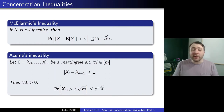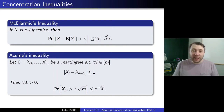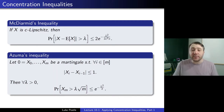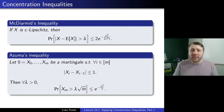That was McDiarmid's inequality, which we derived from the more general Azuma's inequality. If 0 = X₀, …, Xₘ is a martingale starting at 0, such that Xᵢ − Xᵢ₋₁ is at most 1 in absolute value for every i, then for every λ > 0, the probability that Xₘ > λ√m is at most e^{−λ²/2}. You can scale the variables if you want them to change by c, renormalize so the expectation is 0, and then derive McDiarmid's from Azuma's.